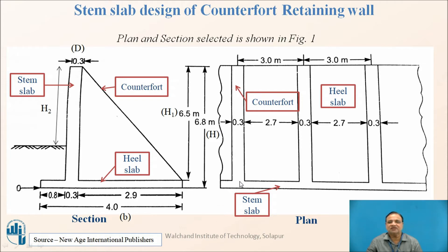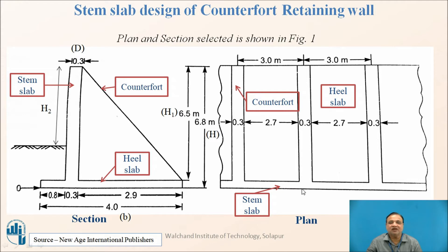Today we are going to see the design of the stem slab. The stem slab is a continuous slab in the case of a counterfort retaining wall, whereas in the case of a cantilever retaining wall it was a cantilever slab. Since it is a continuous slab, you will find the maximum bending moment near the face of the support, that is near the face of the counterfort.